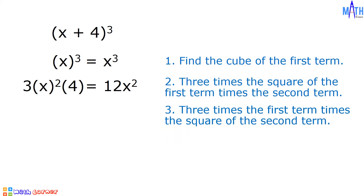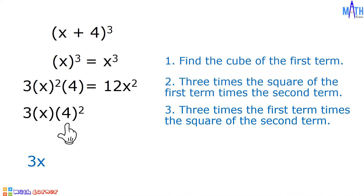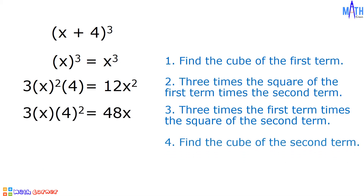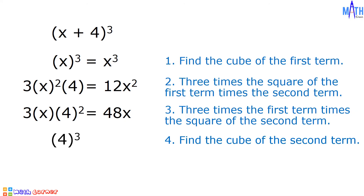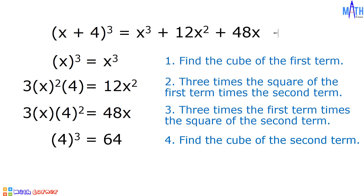Step number 3: 3 times the first term times the square of the second term. 3 times x times square of 4. 3 times x equals 3x. Square of 4 is equal to 16. 3x times 16 is equal to 48x. Step number 4: cube of 4, or 4 times 4 times 4, is equal to 64. And the cube of x plus 4 equals x cubed plus 12x squared plus 48x plus 64.